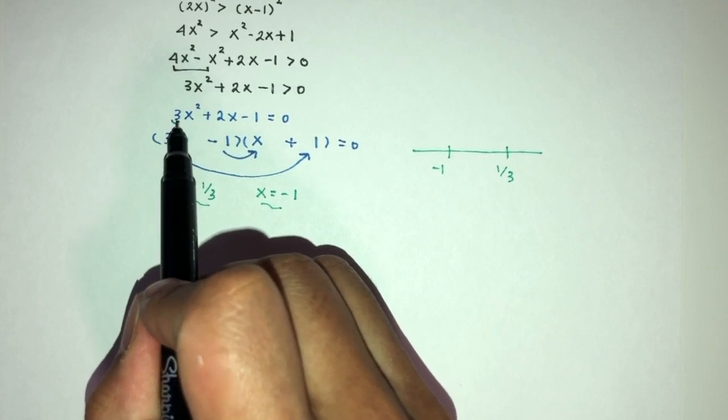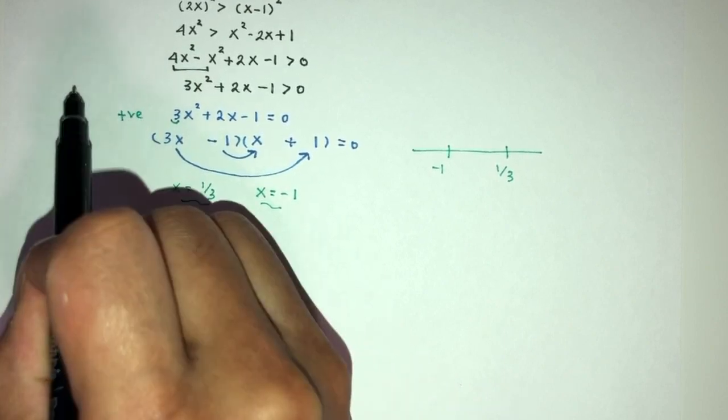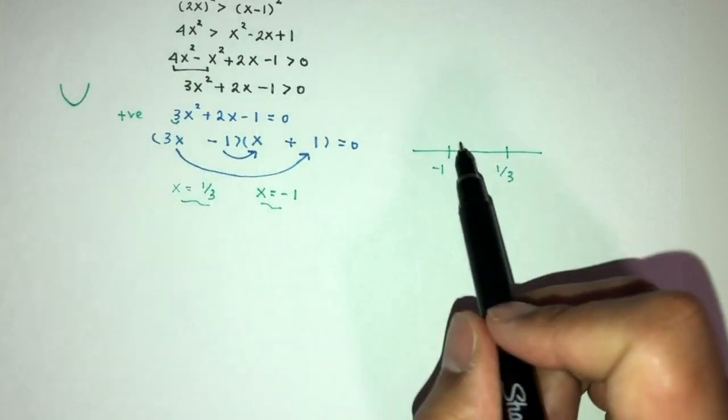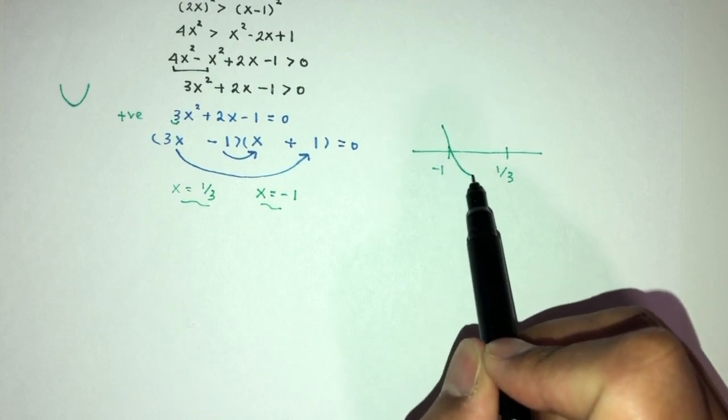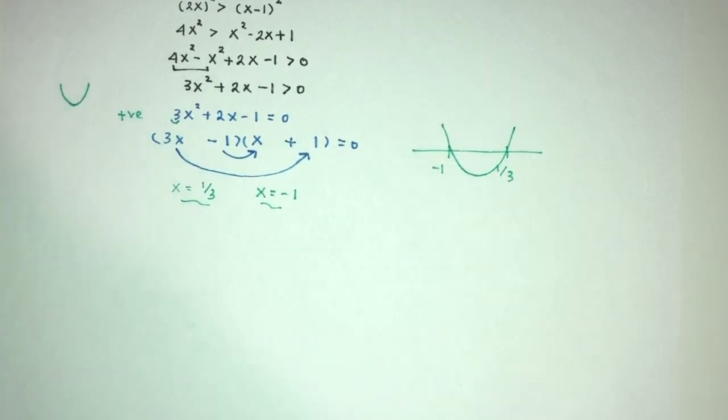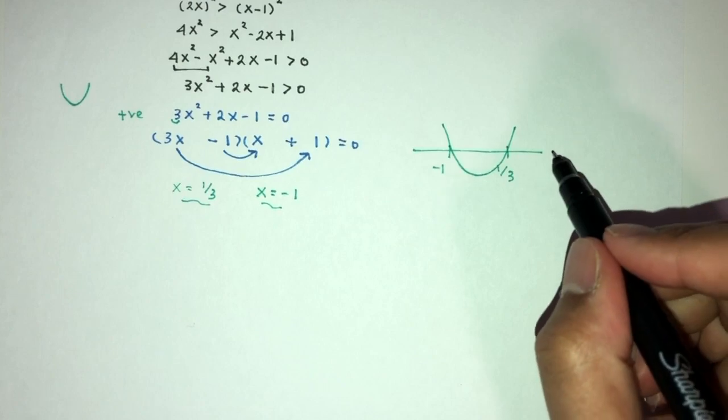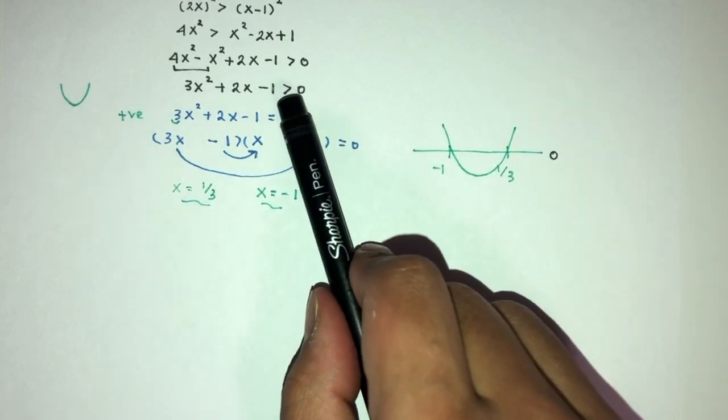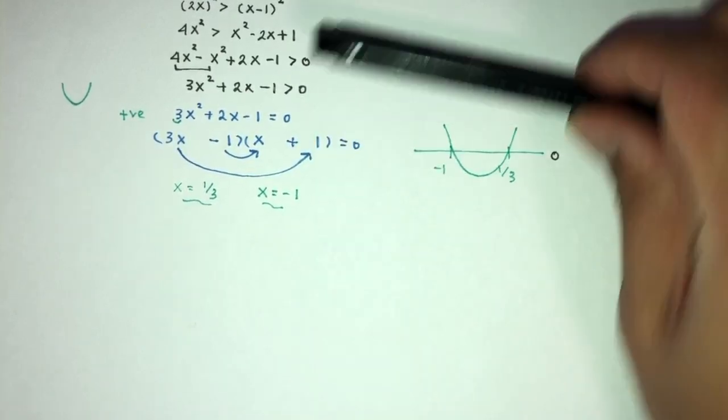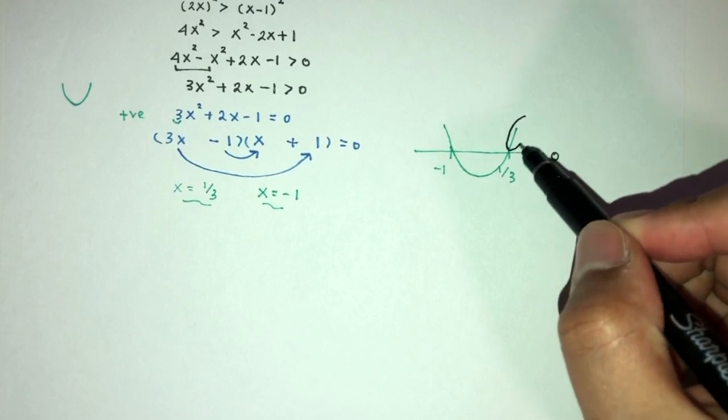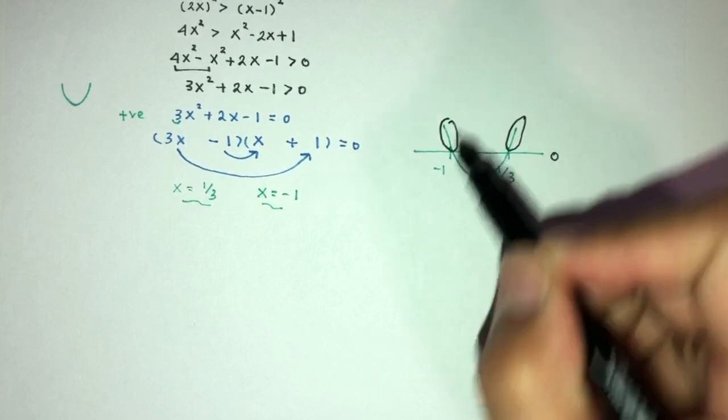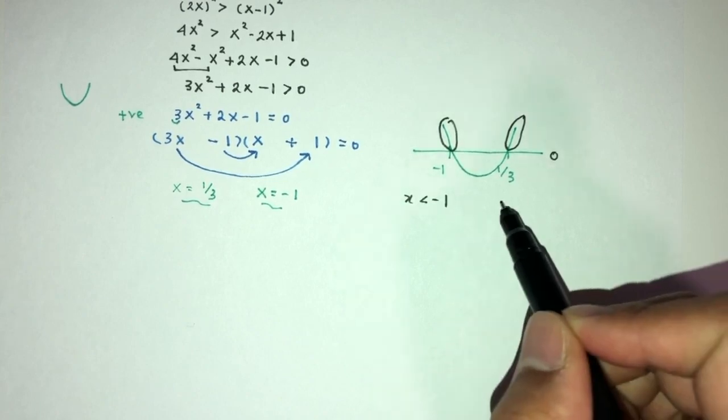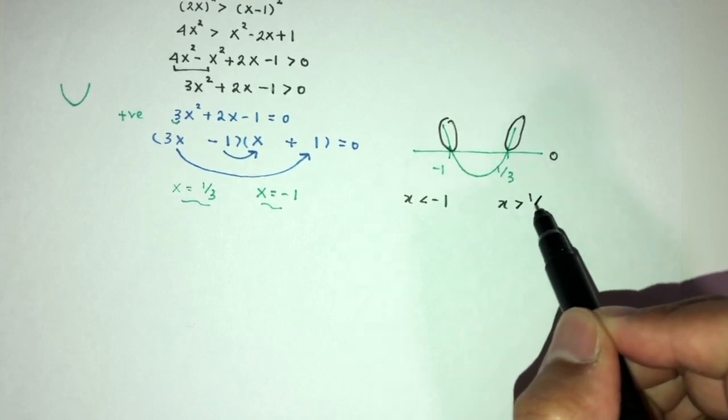It is a positive value. So, we know that you have a minimum shape. You will have the shape something like this. This is my 0 line. I need this to be more than 0. So, more will be up. It will be on this side and on this side. Basically, x will have to be less than minus 1. x will have to be more than 1 over 3.